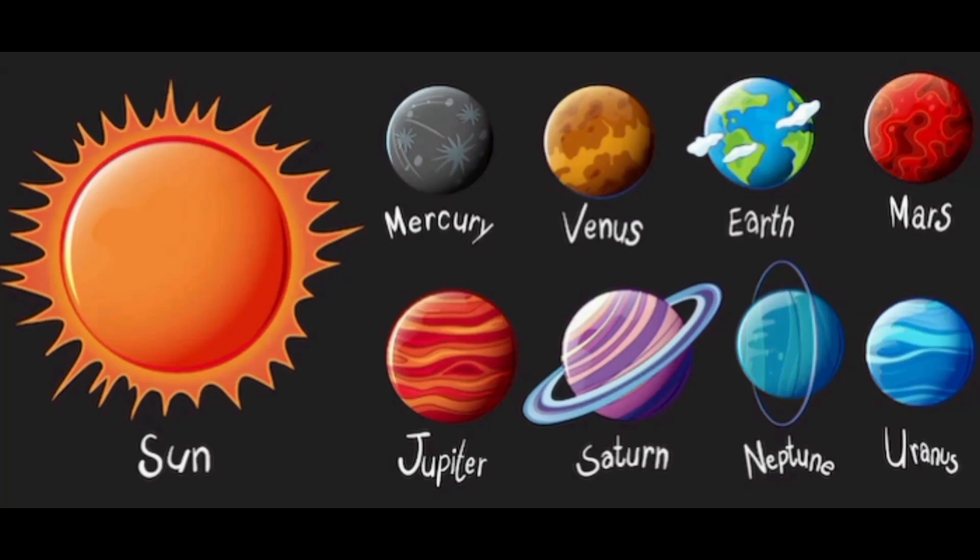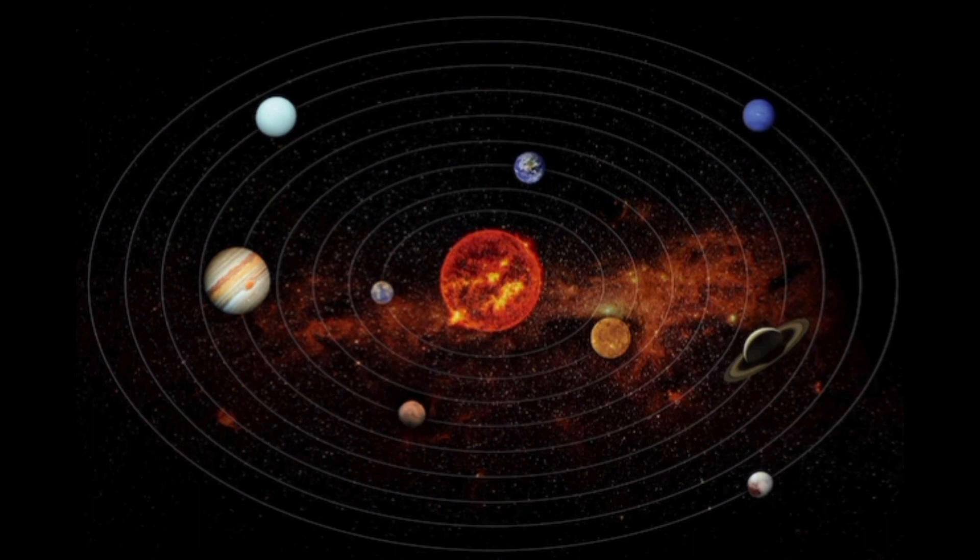Hi everyone, I'm going to sing a solar system song. Eight planets around the sun, let me call them one by one.